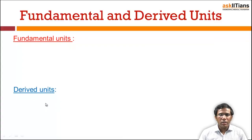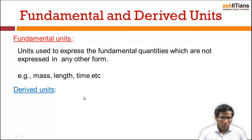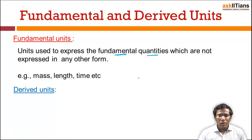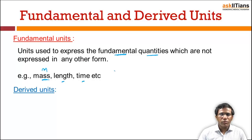Now let's understand fundamental units and derived units. Fundamental units are used to express fundamental quantities which cannot be expressed in any other form. Examples of fundamental quantities are mass (M), length (L), and time (T). These three are the fundamental units used to express fundamental quantities.